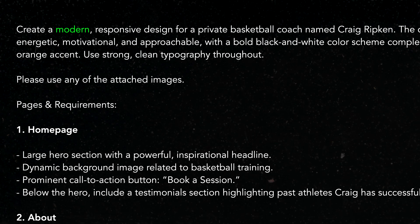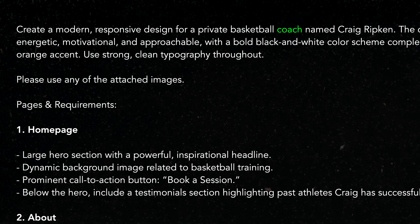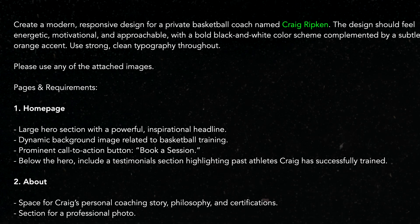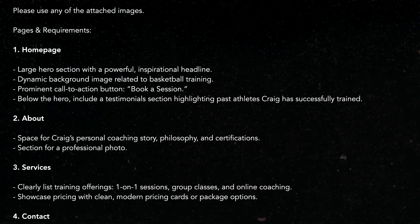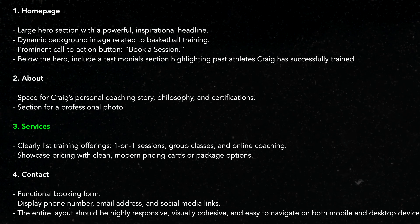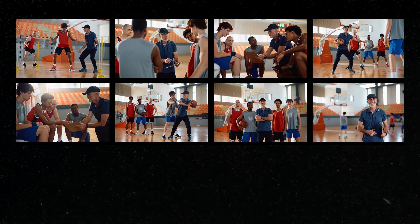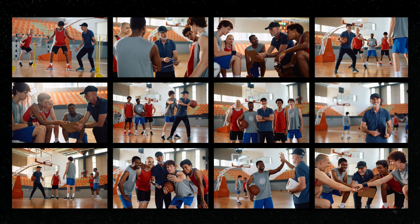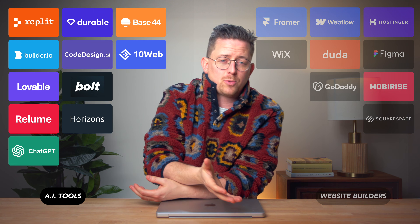I want a modern responsive design for a private basketball coach named Craig Ripken. Should have a subtle orange accent, include four pages: homepage, about, services, and contact. And if I could add images, I gave them some photos I found on a stock photo website. Let's first check out what the AI tools generated with this prompt.